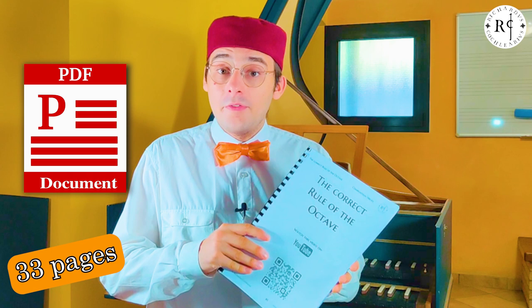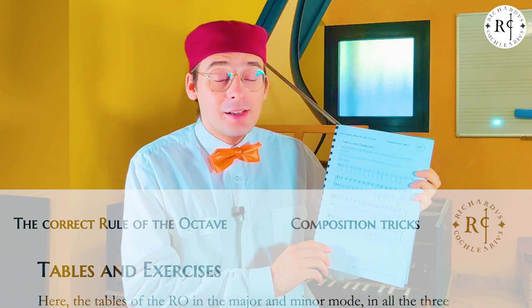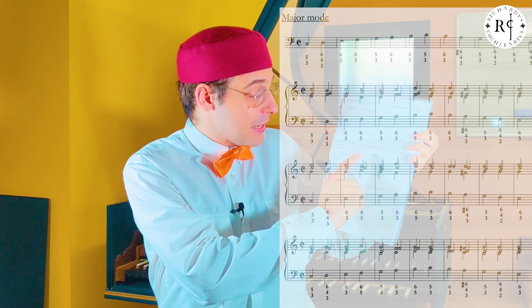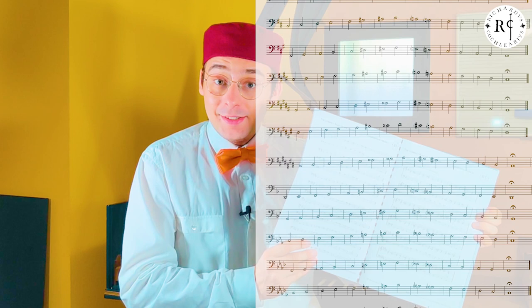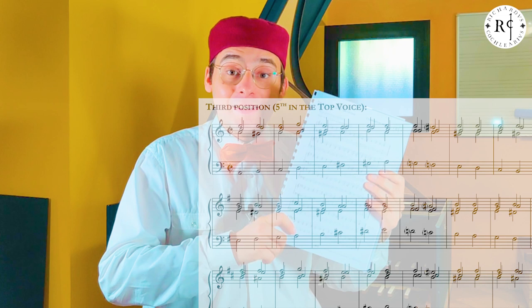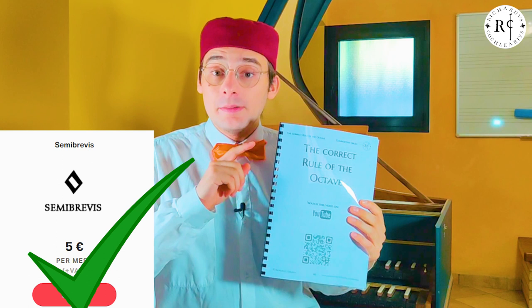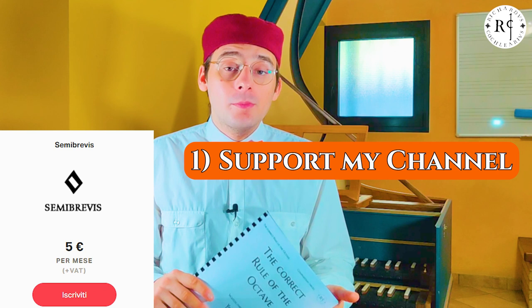At the end you will find tables and exercises: the major rule of the octave with its harmonizations in the three positions, the minor rule of the octave with its harmonizations in the three positions, all the scales to practice the rule of the octave at the keyboard in all keys — major and minor — and all the realizations of the major and minor mode scales in all three positions. You can download this special PDF by subscribing to the Semibrevis membership on my Patreon page. With the Semibrevis membership you can support my channel, helping me to create new videos, and you can also download all the PDFs of all my videos.